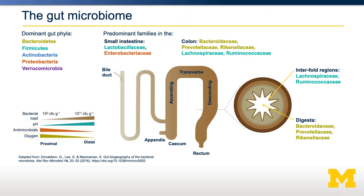The specific bacterial families present in the small intestine differ from those in the colon, and this is largely driven by these environmental changes.